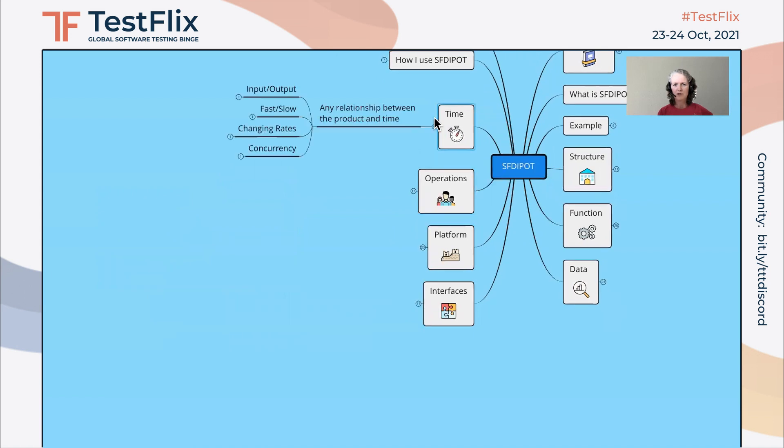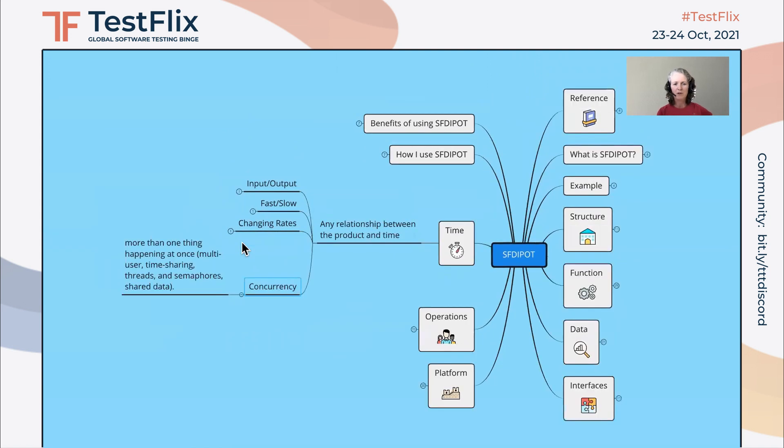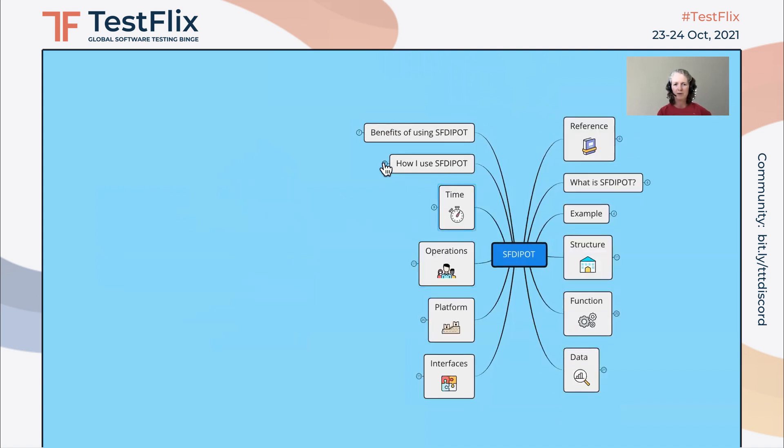And the last option to look at is time. One area here could be about concurrency. Concurrency is if multiple users are uploading multiple files at the same time, can it handle this without crashing? And are there any issues that arise if you try to do this? There are other aspects as well to look at here in terms of input output, fast and slow, and changing rates and interruptions. Like if the network goes down, what way is that handled? Can it be handled in the right way?